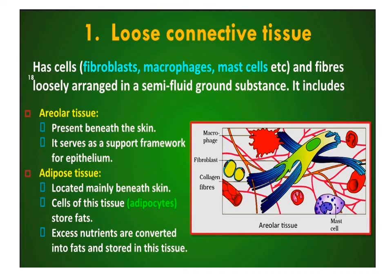Loose connective tissue has cells and fibers loosely arranged in a semi-fluid ground substance or matrix. It is of two types: areolar tissue and adipose tissue. Areolar tissue is present beneath the skin and provides a support framework for epithelium. It contains three types of cells: fibroblasts, which produce and secrete fibers, macrophages, and mast cells.